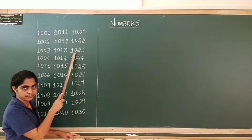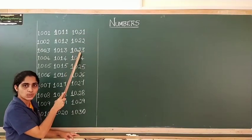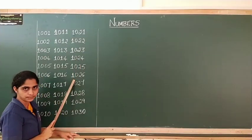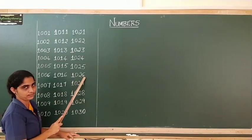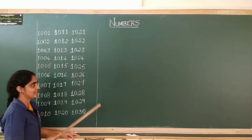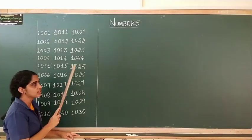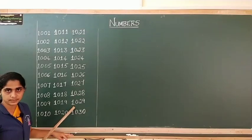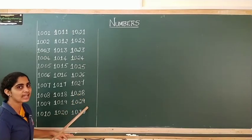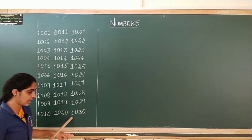Now tell me how do you read this number? Yes — 1,000 then these two numbers we are reading together, so it will be 1,023. How do we read? 1,023. Now tell me how do you read this number? 1,026. 1,026. Now which number comes before 1,026? Yes, it is 1,025. How do you read it? 1,025. Now tell me how do you read this number? It is 1,029. 1,029. Now which number comes after 1,029? Yes, it is 1,030. 1,030.